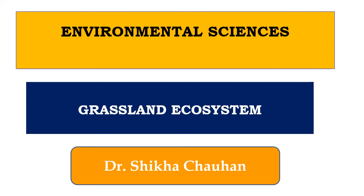In the previous video we discussed about the forest ecosystem and aquatic ecosystem. In both types of ecosystems we first discussed about the biotic components associated, the abiotic components associated, the surrounding characteristic conditions prevailing over those particular areas, and their influence on these biotic and abiotic components. So let us try to figure out the basic differences between these types of ecosystem and understand the special characteristics associated with the grassland ecosystem.